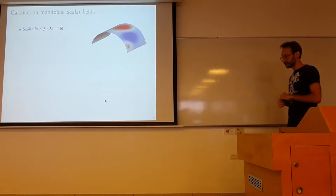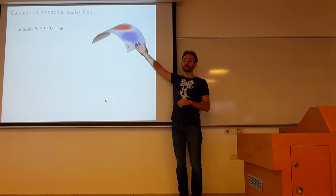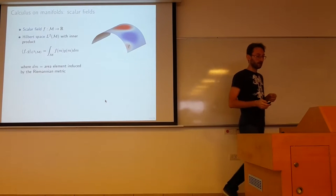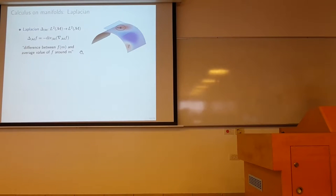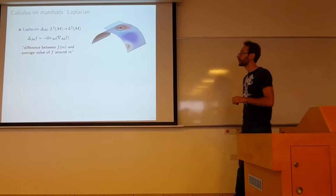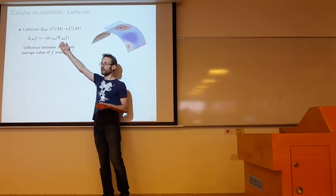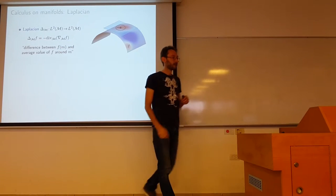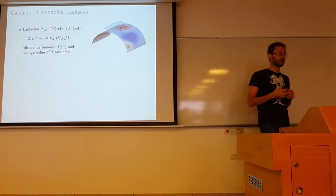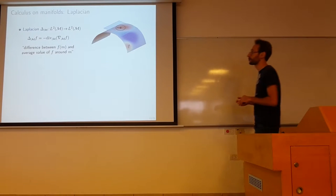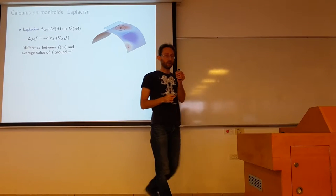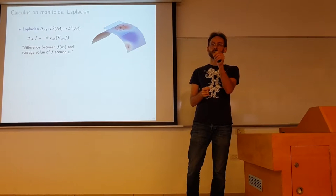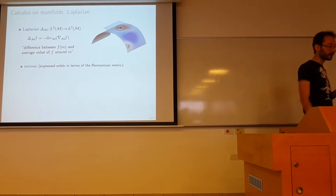Now we'll be interested in doing calculus on manifolds. Imagine you have some smooth scalar function that lives on the manifold. You can define a Hilbert space with this inner product — a space of square-integrable functions — where the area element is induced by the Riemannian measure. We will be interested in studying properties of the Laplace-Beltrami operator, defined in the usual way, where all these operators are in principle defined in the tangent space. You compute the gradient, which is a vector on the tangent space, and apply the divergence, also an operator on the tangent space. Geometrically, you can think of the Laplacian as the difference between the value of a function at a point and the local average in an infinitesimal circle around that point.